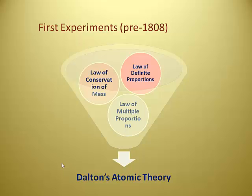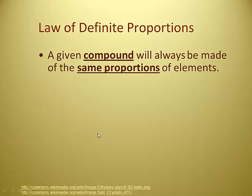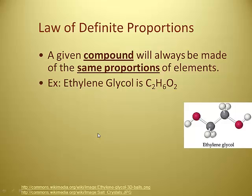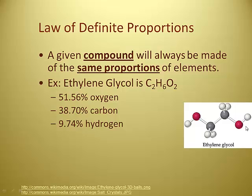We fast forward 2,000 years to about 1808 when the first real chemical science is being done. There were three important laws. The law of definite proportions states that a given compound will always be made of the same proportions of elements. Ethylene glycol is C2H6O2, always — any sample will be 2 carbons, 6 hydrogens, and 2 oxygens.